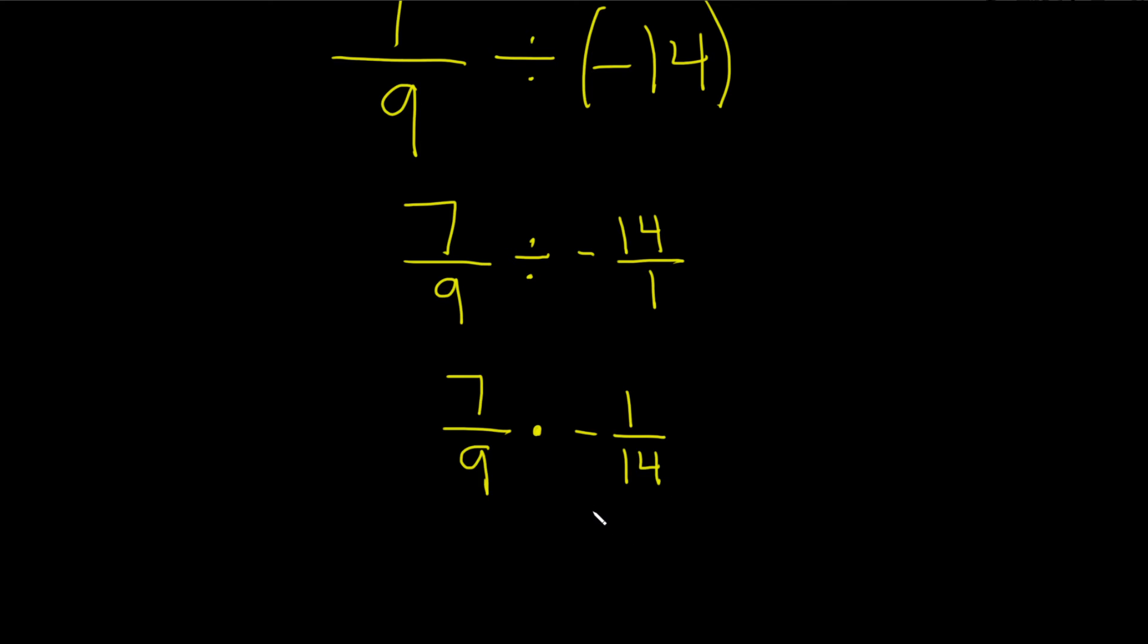And now we look for cancellation. So numbers on the top are allowed to cancel with numbers on the bottom. So it looks like we can do some cancellation here. The 7 and the 14.